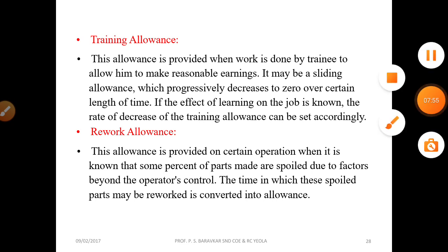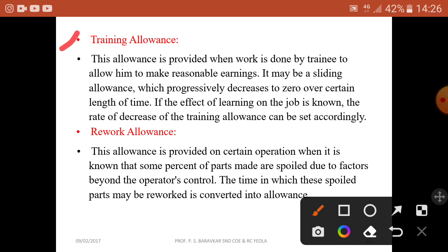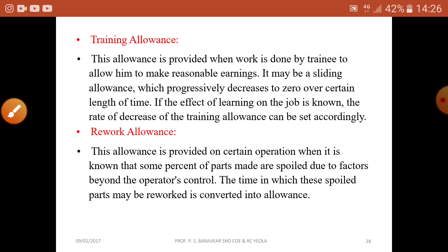The training allowance is provided when work is done by a trainee, to allow him to make a reasonable earning. It may be a sliding allowance which progressively decreases to zero over a certain length of time. If the effect of learning on the job is known, the rate of decrease of the training allowance can be set accordingly.